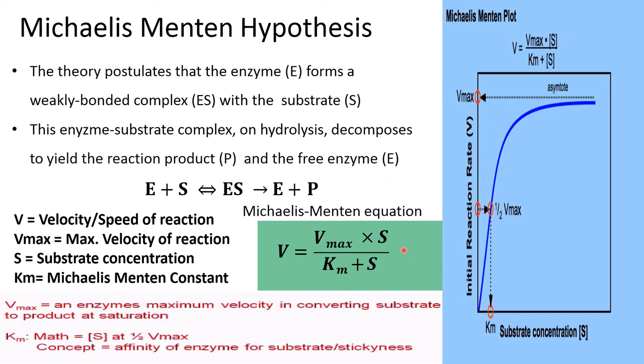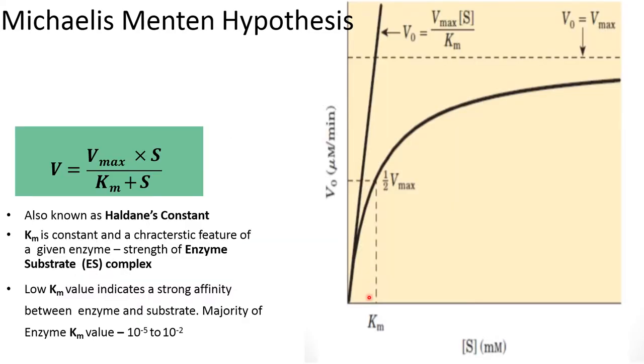The concept of this hypothesis is to define the affinity of the enzyme for substrate. Michaelis-Menten hypothesis is also known as Haldane's constant.